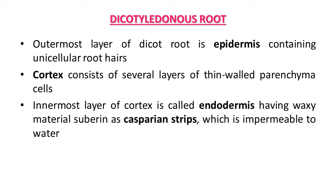Now let's study the anatomy of dicotyledonous root. To study any plant organ — root, stem, or leaf — we take a section to study the internal arrangement. In dicotyledonous root, different tissues are arranged in different layers. The outermost layer is known as epidermis, and since it is the anatomy of a root, it contains root hairs — which are unicellular outgrowths of the epidermis layer. Their function is to increase the absorptive surface area.